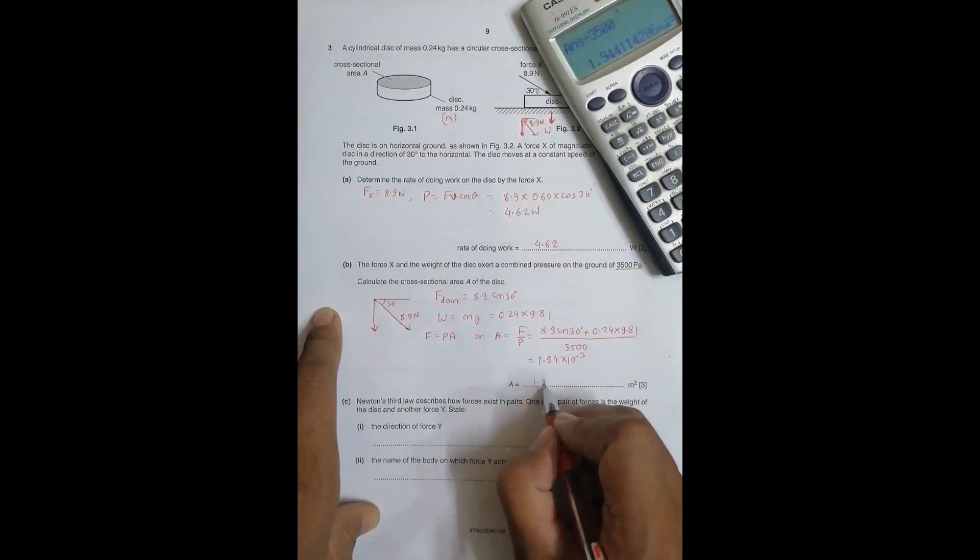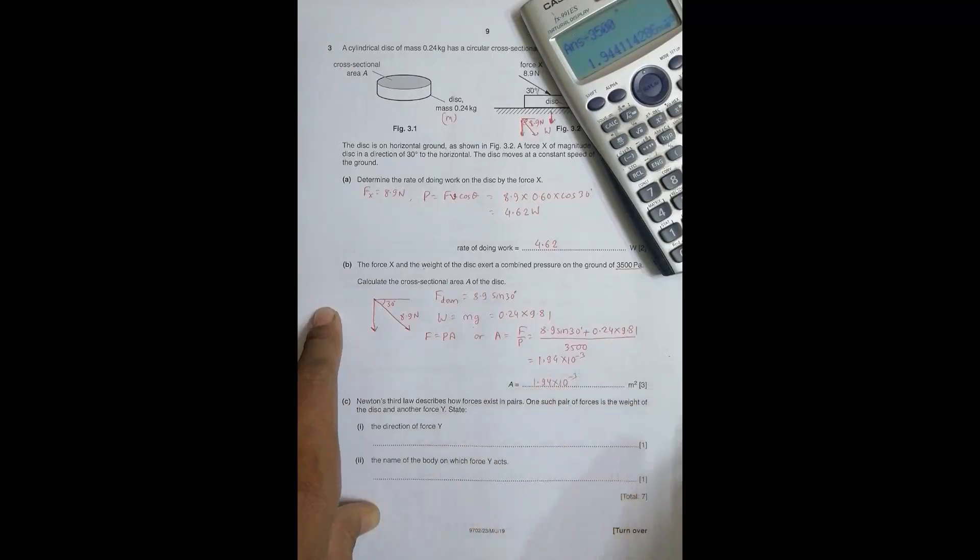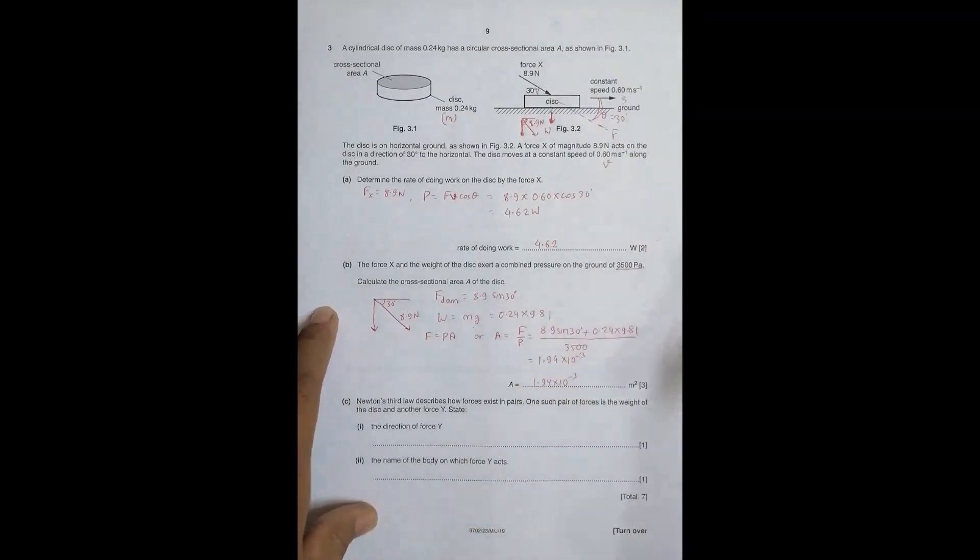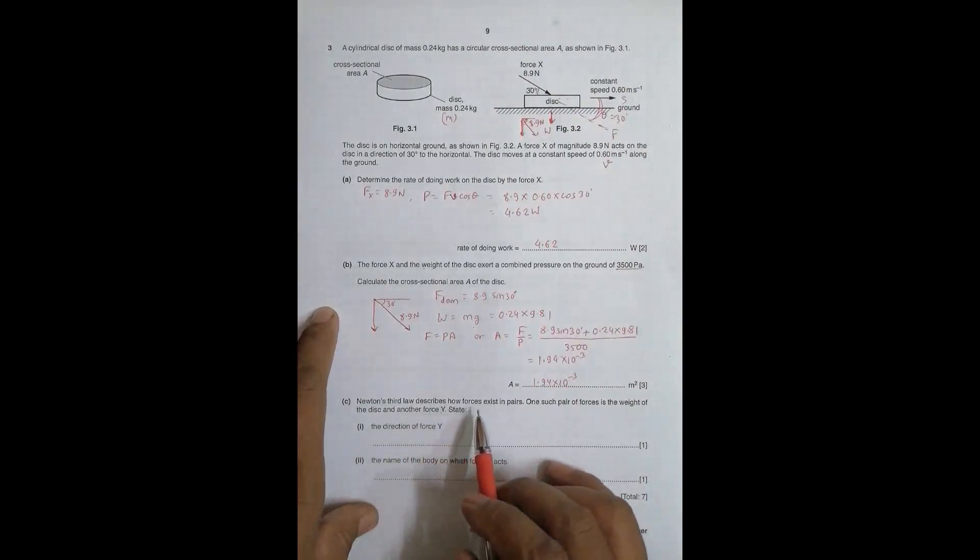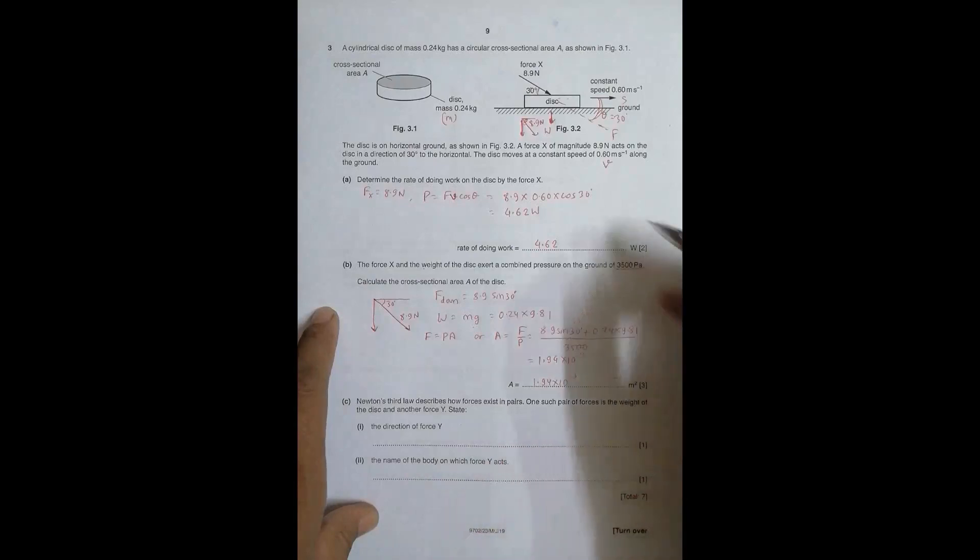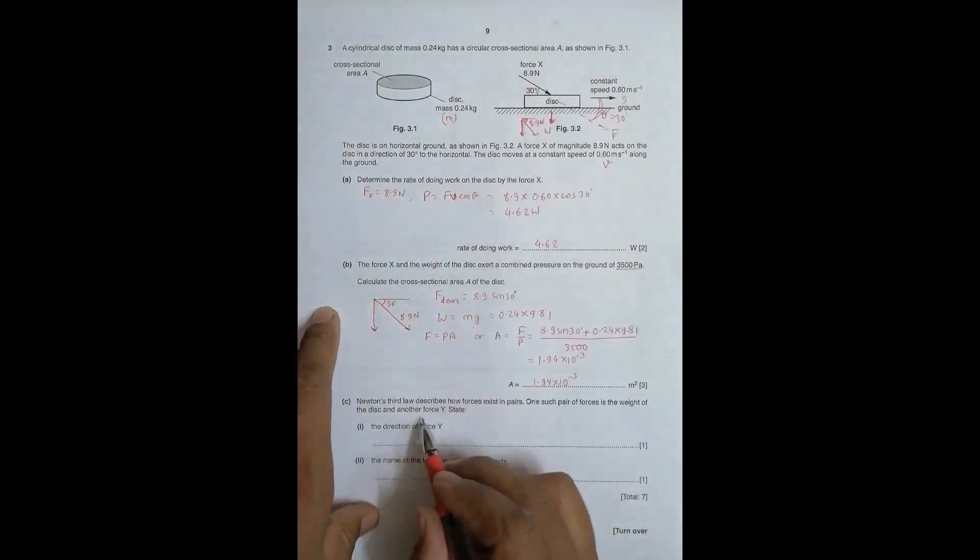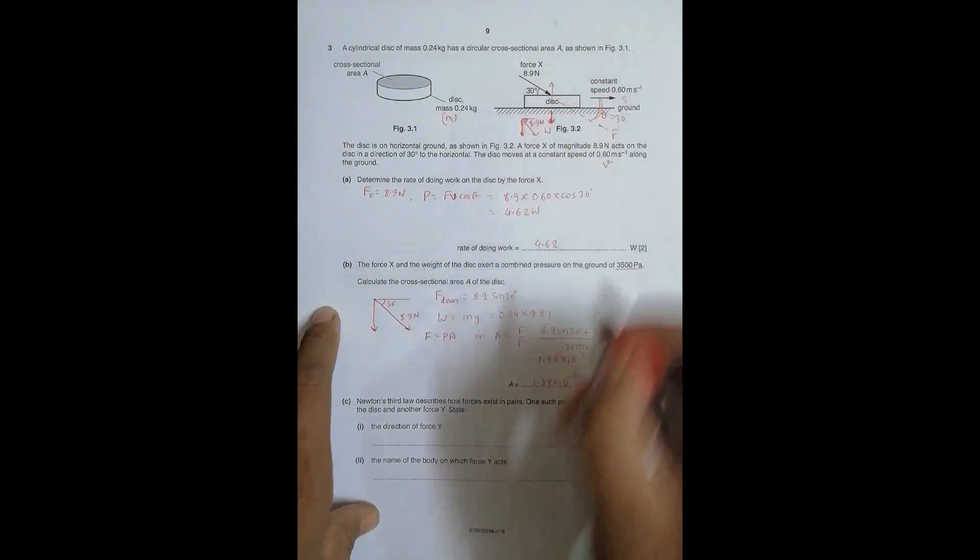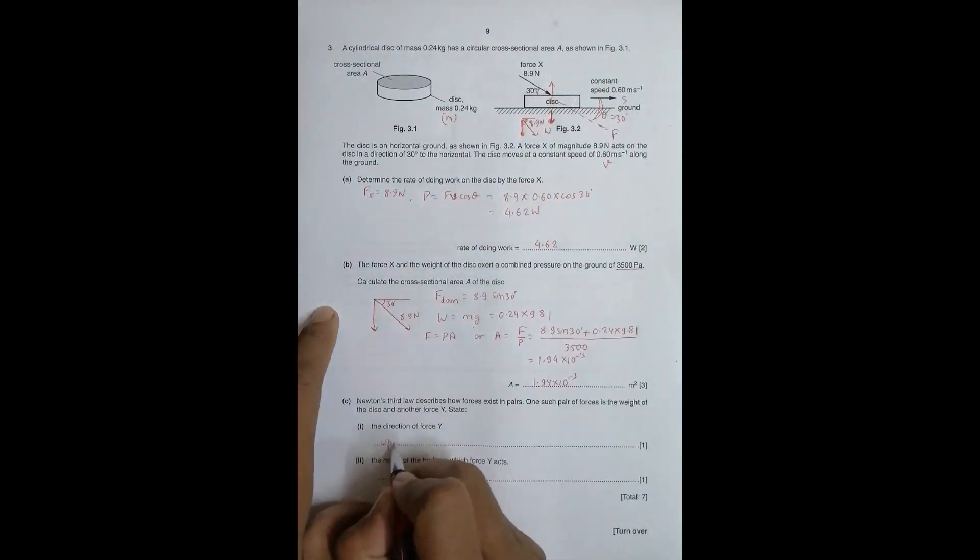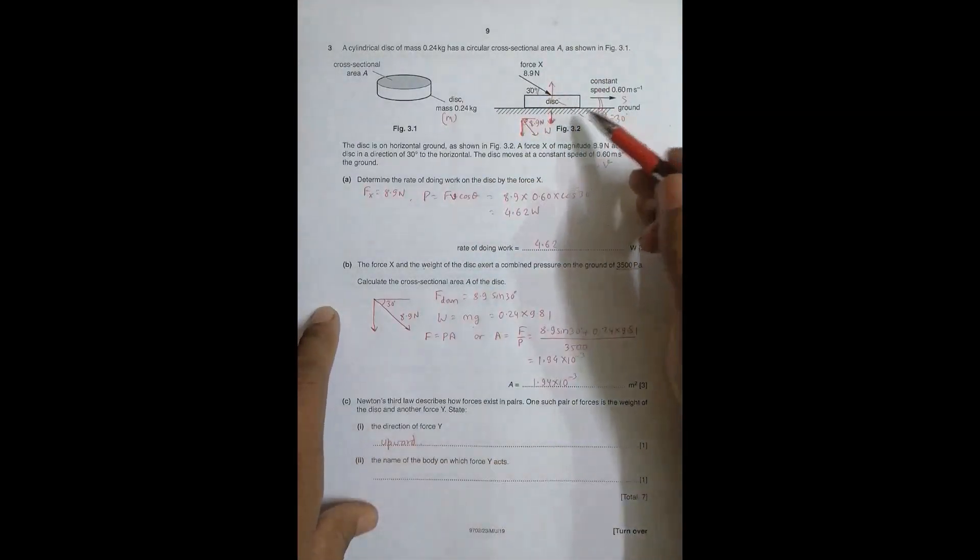Now Newton's third law describes how forces exist in pairs. One such pair of forces is the weight of the disk and another force Y. State the direction of force Y. The weight of the disk acts downward, so the other force or its reaction pair should be acting upward.